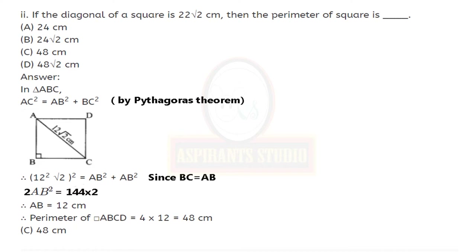Correction: the question value should be 12√2 cm. If the diagonal of the square is 12√2 cm, then the perimeter of the square is dash. In triangle ABC, AC squared equals AB squared plus BC squared. Substitute: 12√2 (the whole square) equals AB squared plus AB squared, which equals 2 times AB squared.